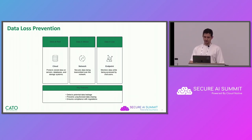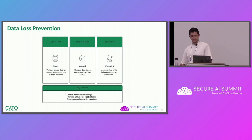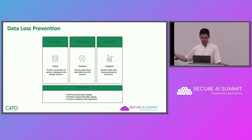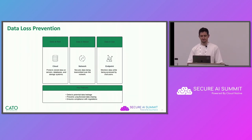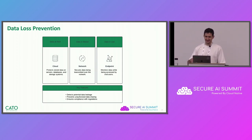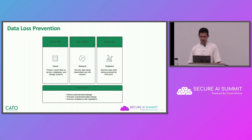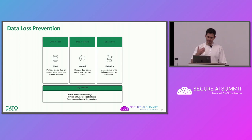A DLP solution will aim to cover misusage in all three different states of data. That could be data at rest — if the data is stored on a server or a database, these days mostly on the cloud. It could be data in motion, so data passing through your network. And it could be data in use — data stored on the endpoint device and accessed by the user. So a DLP solution will aim to cover all three states: cloud, network, and endpoint.